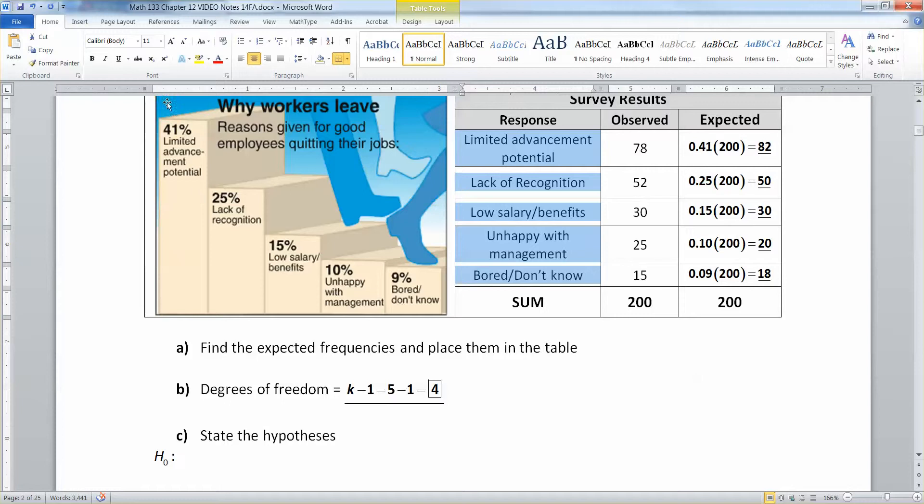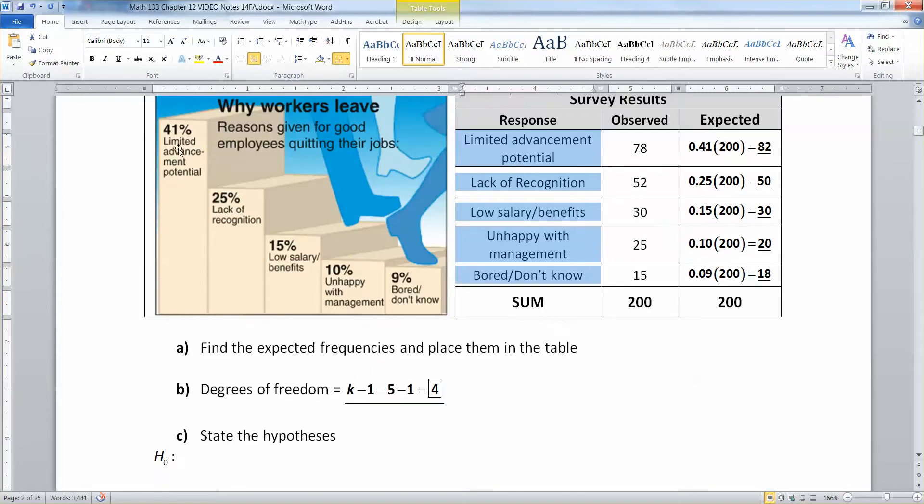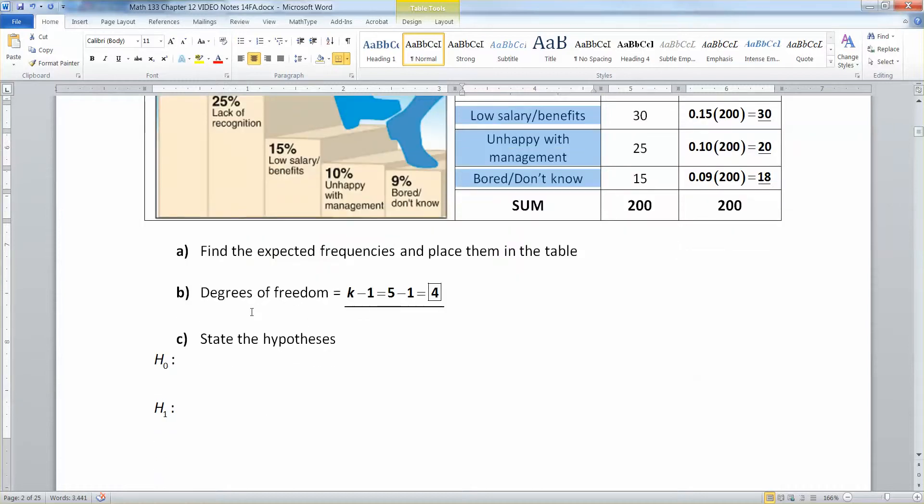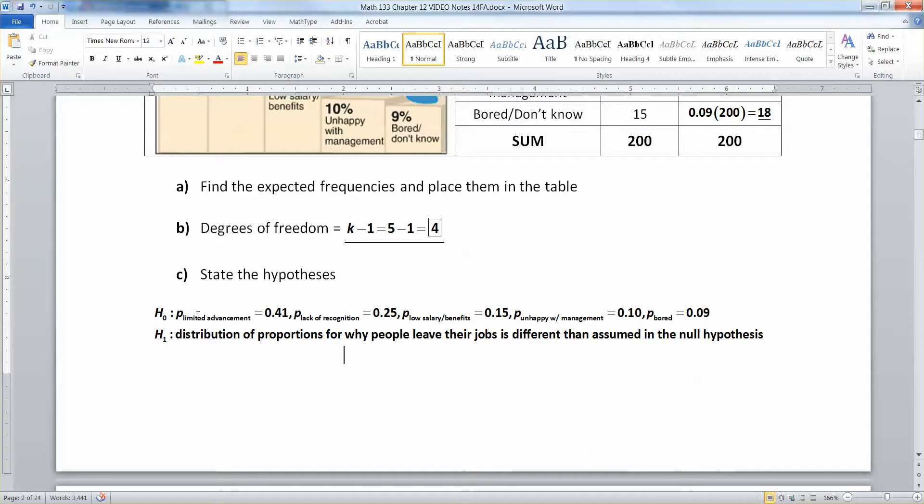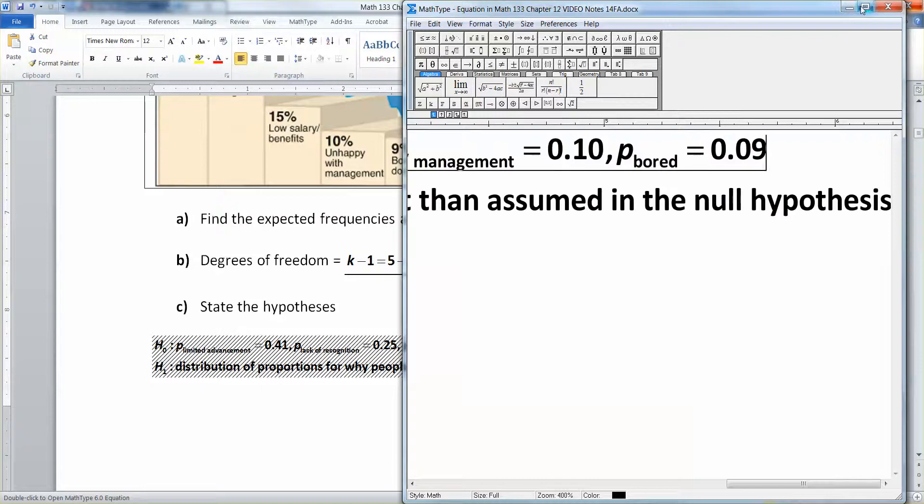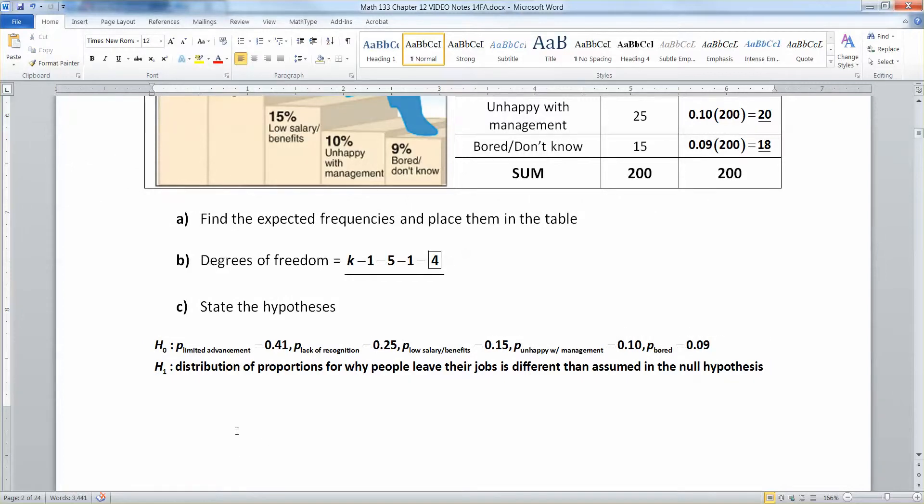Now, as for our hypotheses, the null hypothesis is basically set up here with this picture. So you type that up and you'd say the proportion for this limited advancement is 41%, the proportion for recognition would be 25% and so on. And the alternative to that is that at least one of those is different. The proportion for why people leave their jobs is different from what we expect in the null. So I typed that one up. It's a long one. So we have the null says the proportion for limited advancement is 0.41, proportion for lack of recognition is 0.25, low salary and benefits is 0.15, unhappy with management is 0.10, and then bored is 0.09. And then the alternative to that is that the distribution of proportions for why people leave their jobs is different than assumed in the null hypothesis. There's lots of ways you can write that. You can say the distribution of proportions is different from the null. You can say at least one of those proportions is different than what was assumed in the null.